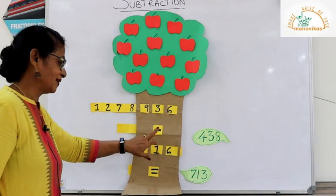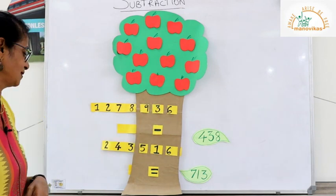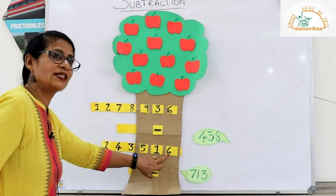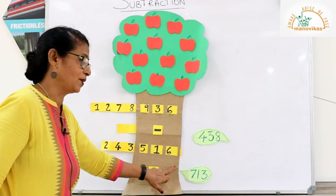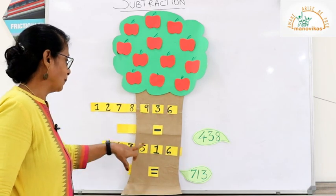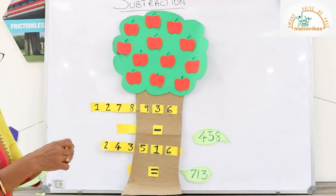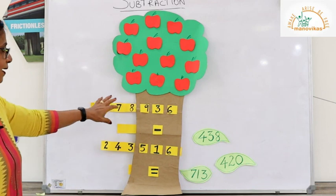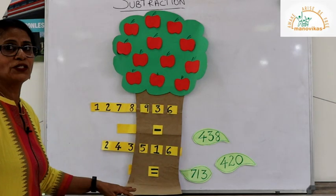Now let's play with another 3-digit number: 936 minus 516. We take away 516 from 936. In the ones place: 6 minus 6 gives 0 — when two same numbers are subtracted the answer is 0. In the tens place: 3 minus 1 gives 2. In the hundreds place: 9 minus 5 gives 4. So the answer to our third game is 420. The first sum was addition, the other two were subtraction.